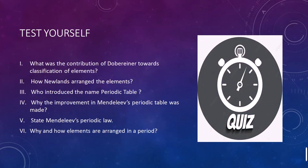Now for a test activity to review the classification of elements. First question: What was Döbereiner's contribution to the classification of elements? Döbereiner was the first scientist who gave us the Triads for the classification of elements based on atomic mass. He stated that if we want to find the atomic mass of the central atom, we take the average of the first and third elements of the triad.